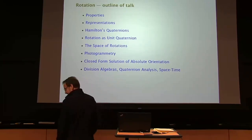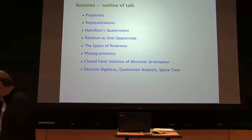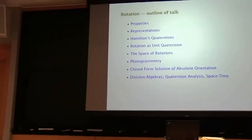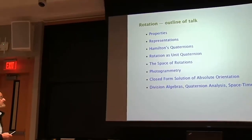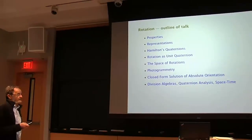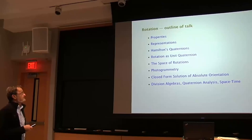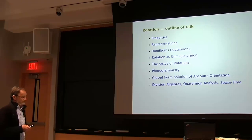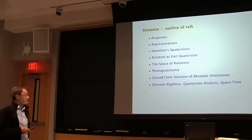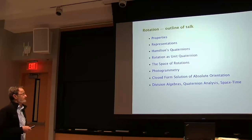Here's an outline of what we're going to be talking about: properties of rotation, different representations for rotations, and in particular the one we're going to pick, which is Hamilton's quaternions. They're more general, but if we restrict attention to unit quaternions, they map directly onto rotations in three-space.